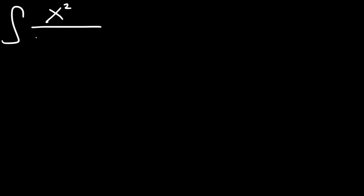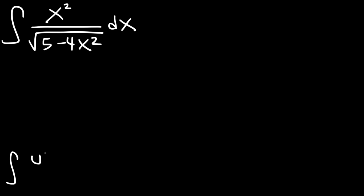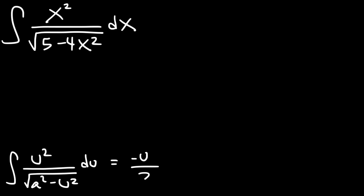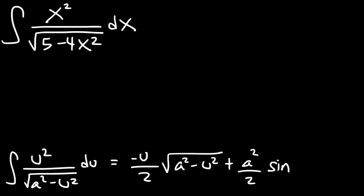Let's work on one more problem: find the indefinite integral of x squared divided by the square root of 5 minus 4x squared. The formula to use is: the integral of u squared divided by the square root of a squared minus u squared du equals negative u over 2 times the square root of a squared minus u squared, plus a squared over 2 times arc sine of u divided by a, plus c.